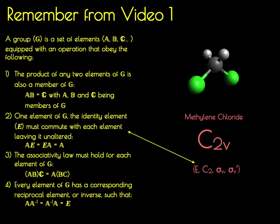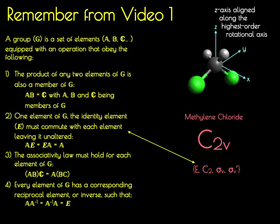It is going to be convenient to define a coordinate system for the molecule. By convention we use a right-handed Cartesian axis system, placing the z-axis along the highest order rotational axis and the origin at the central point of the molecule that defines the point group. We can therefore give directionality to these symmetry elements, and we'll look at them both visually and mathematically.